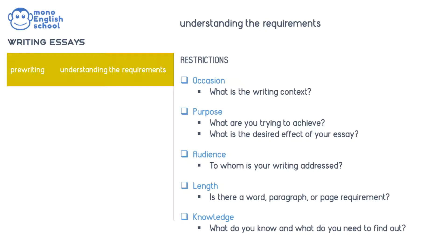Next, consider purpose. What are you trying to achieve? Are you trying to inform, to persuade or inspire? All of these purposes require different approaches. Next, audience. To whom are you writing? Are you required to write in a formal or informal style? Then the length. Is there a word, paragraph or page limit? This is important to know what you can achieve within the requirements.